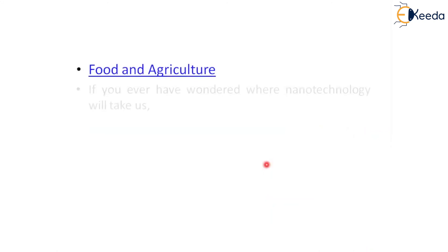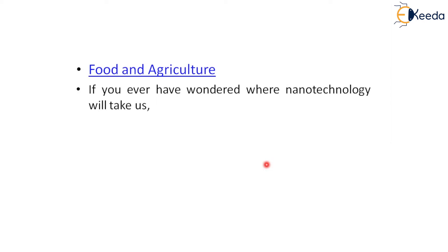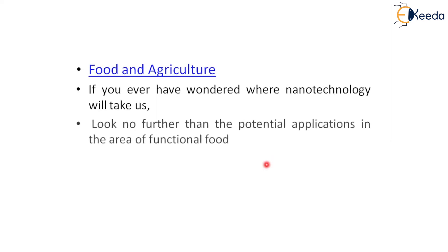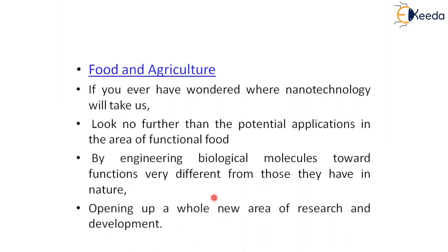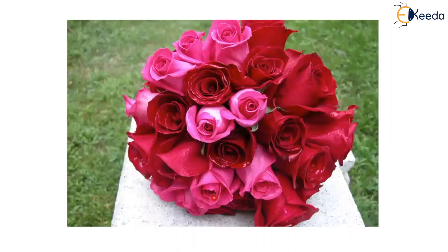In food and agriculture, nanotechnology is very useful. By engineering biological molecules towards functions beyond those they have in nature, a whole new area of research and development in food and agriculture has opened up, and development is still ongoing. Those are the nanomaterials examples covered in this session; in upcoming sessions we will discuss more technological points. Thank you.